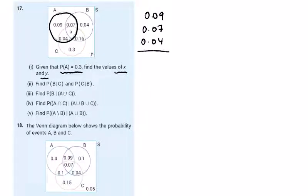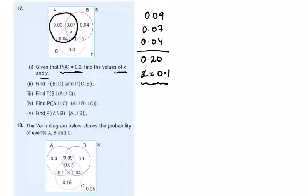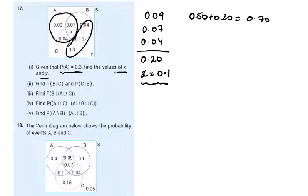16 and 4 is 20, so 0.20, meaning x has to be 0.1. Adding these three together to get what's remaining: 16 and 4 is 20, and 3 is 50, so 0.50 plus 0.20 is 0.70.